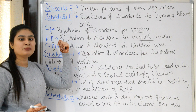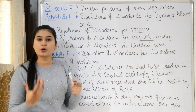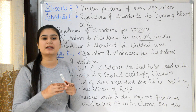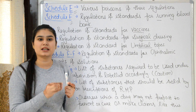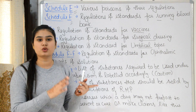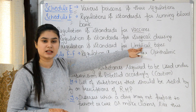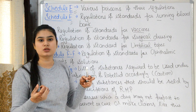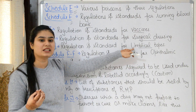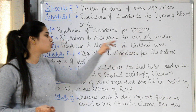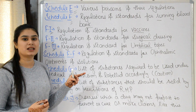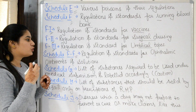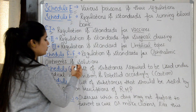Schedule F3 is called umbilical tapes. The regulations and standards for umbilical tapes are in F3. Umbilical tapes are used when a newborn is born — there is a connection between the mother and newborn through the umbilical cord, and when the umbilical cord is cut, bleeding chances increase, so umbilical tapes are used to prevent blood loss. They are also used in surgical procedures involving catheters or arteries and veins.